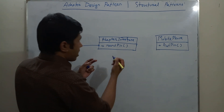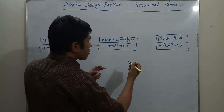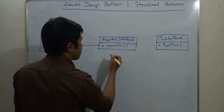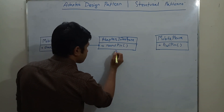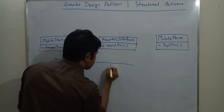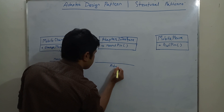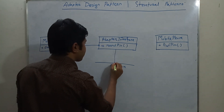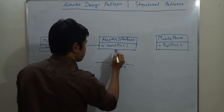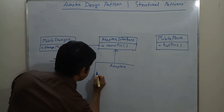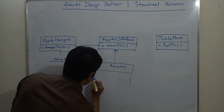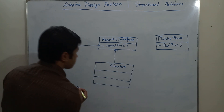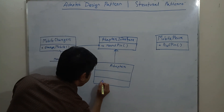From the adapter we need to connect with the mobile phone. Now we will implement the adapter. Here the adapter class will inherit the adapter interface and implement the round pin.